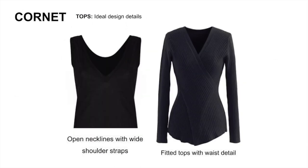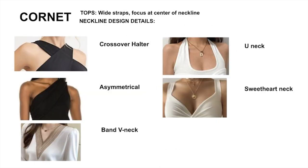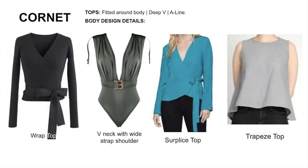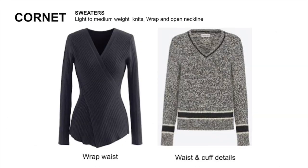For tops, the emphasis should be de-emphasizing the broad shoulders and giving the shape more of a feminine flair. Here are some examples of necklines to draw attention to the clavicles and away from the shoulders. On the sleeve, it should be fitted through the bicep only. These are some examples of tops to draw attention to the waist and not the shoulders. For sweaters, go with a light to medium weight and shift focus to the neck and waist.